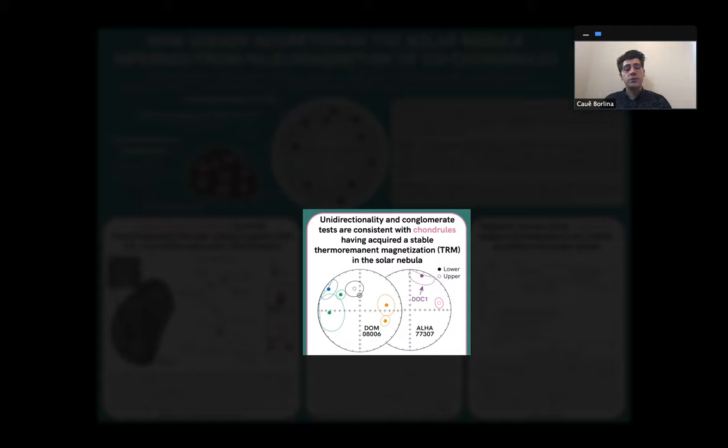We also conducted unidirectionality and conglomerate tests to determine the origin of the magnetization. What we observed is that the chondrules acquired a stable TRM in the solar nebula environment.